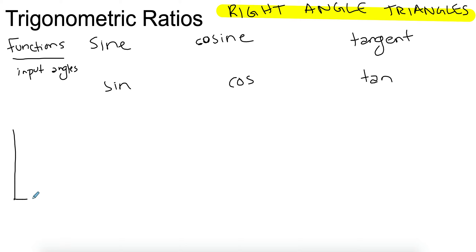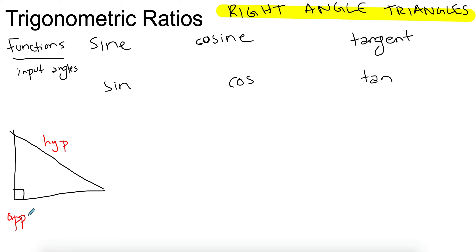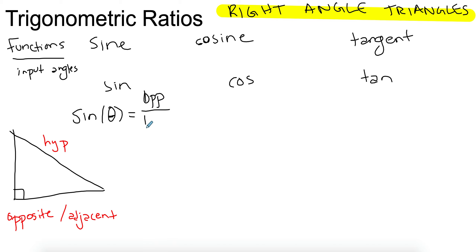In right angle triangles, you have three sides, and each side has a specific label. The side opposite to the right angle is called the hypotenuse. These sides have names that relate to sine, cos, and tan. One is the opposite and the other is adjacent, and they alternate depending on which angle you choose. These are the labels of the lengths.